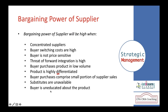If the buyer is uneducated about the product or service — not aware of the technical know-how or product information — then the bargaining power of the supplier is high. Any negative factors in these points means the bargaining power of supplier is low.